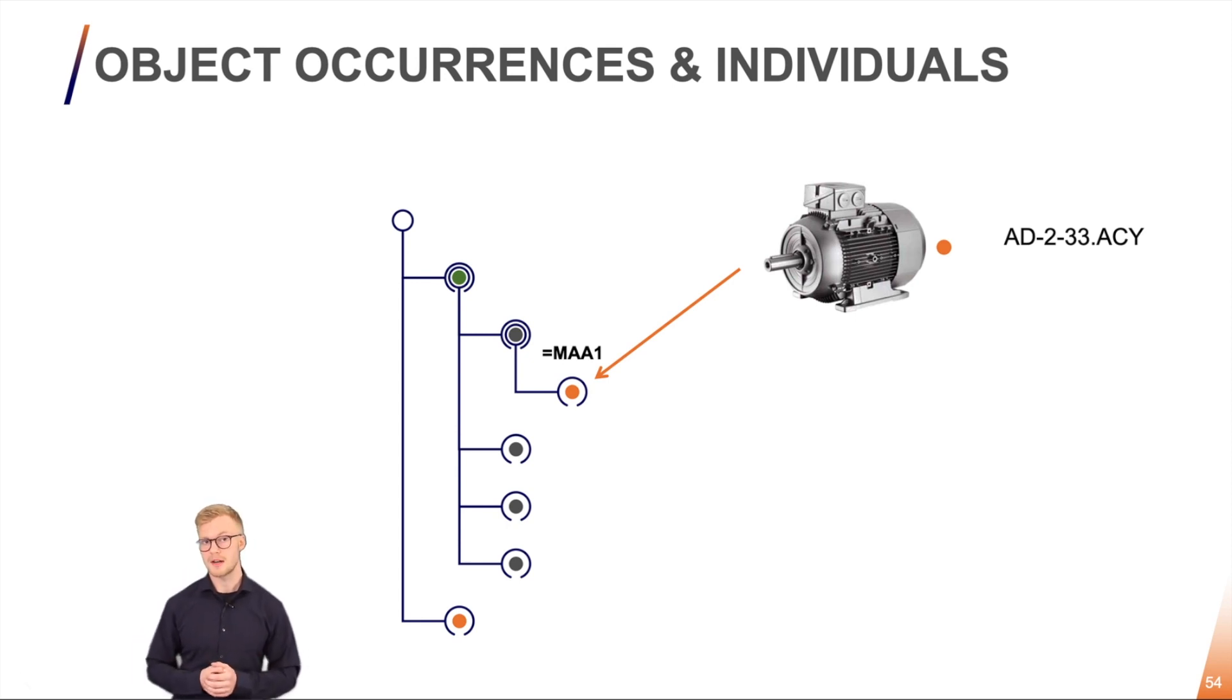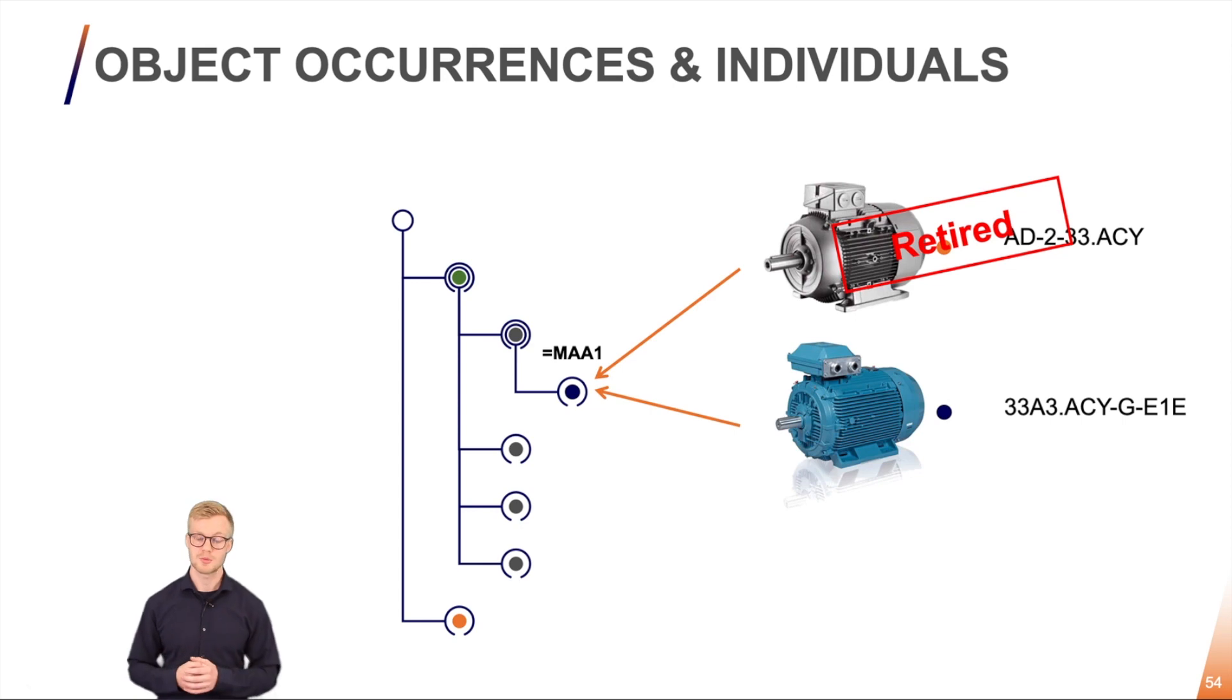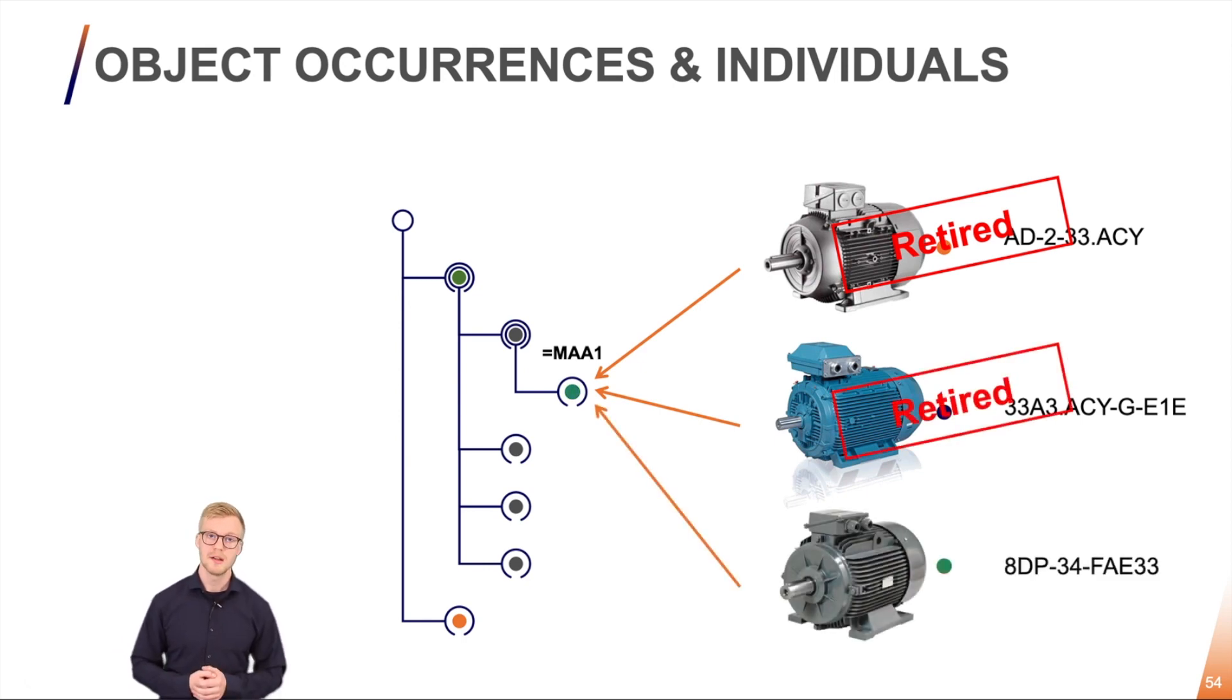At some point that motor is going to be retired but there's no issue because we will just replace it. The reference designation stays the same. It will also be called equal MAA1. When that motor retires we will again swap in a new motor and the new motor will get the same reference designation. So we will have a stable reference designation throughout the lifecycle of our system.